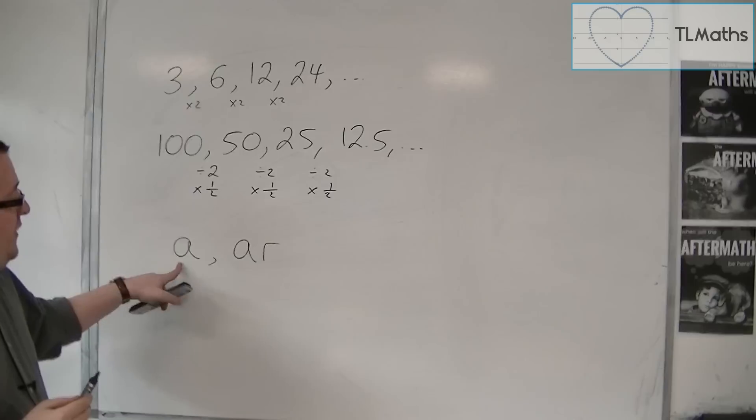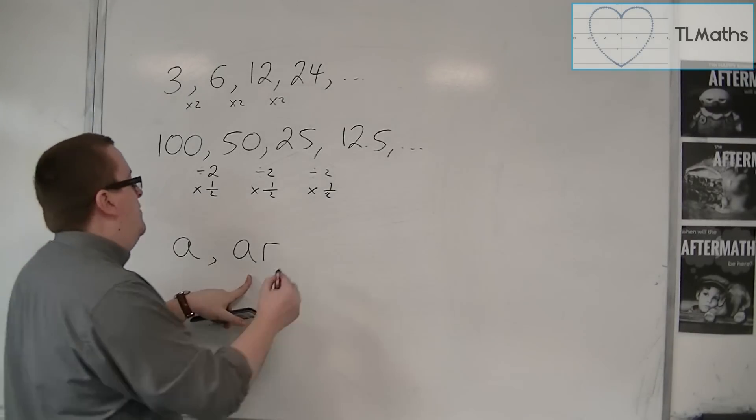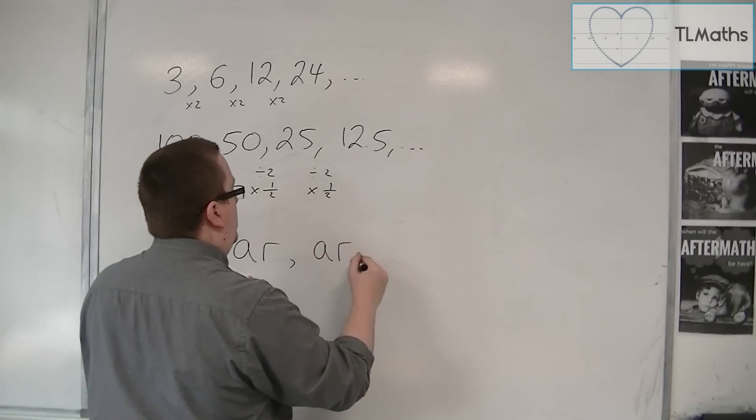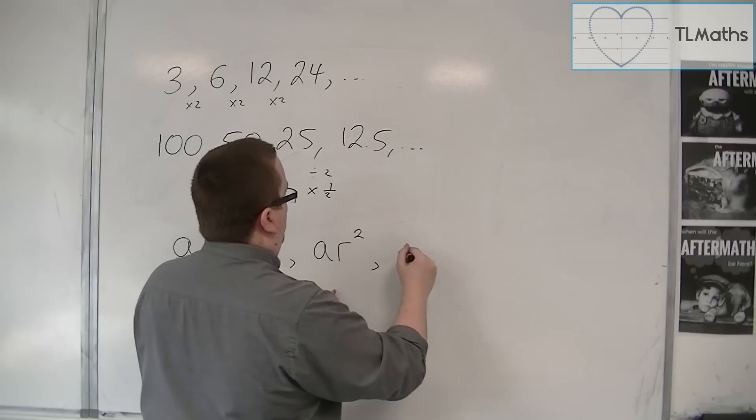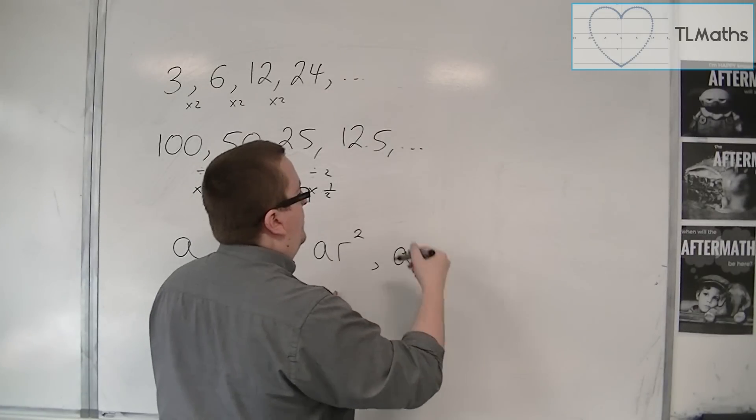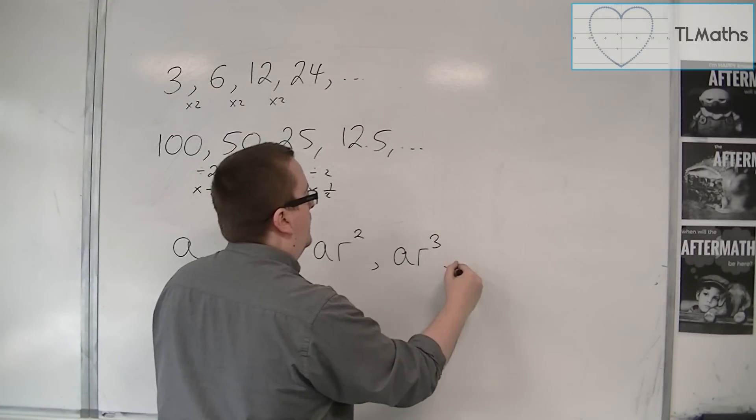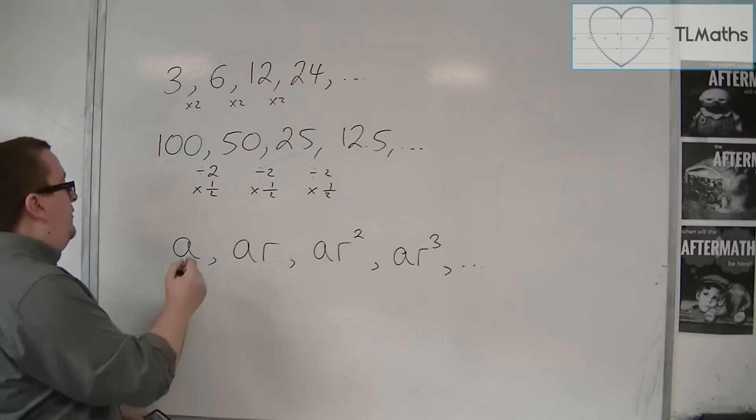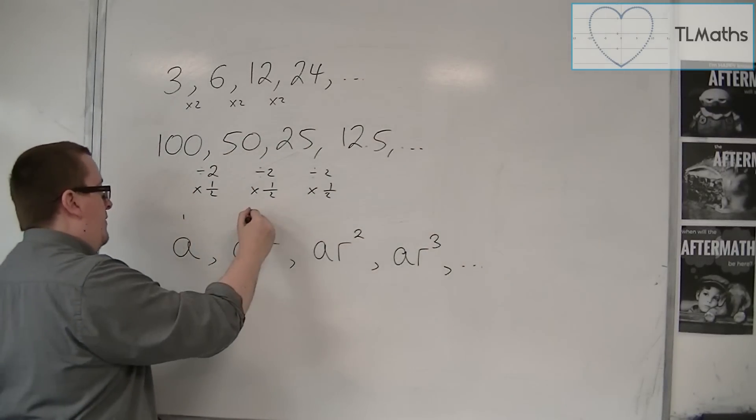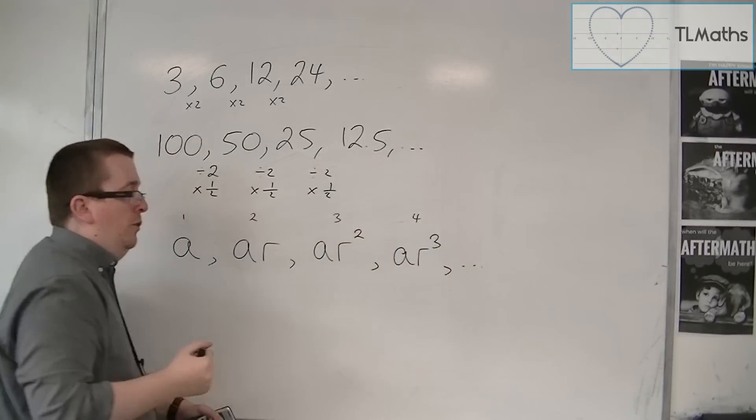So the second term will be a times r. And then the third term will be a times r times r. And the fourth term will be a times r times r times r, and so on and so forth. So if this is the first term, that's the second term, that's the third term, that's the fourth term.